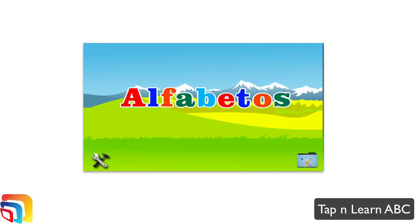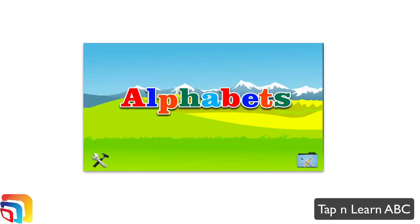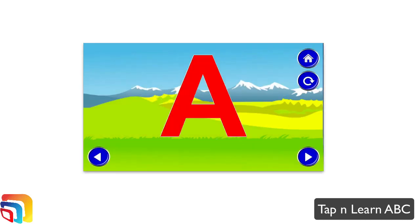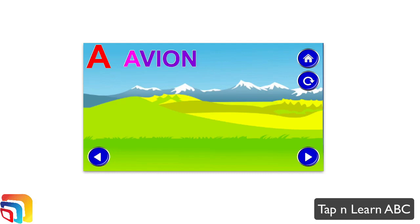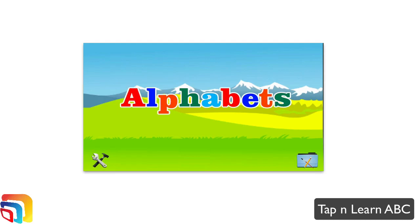They currently support English, Spanish, and French. So we can even just do one in French here, for example. You simply tap it, tap the alphabet — ah, ah, como, avion. You can see here you have the voice, you have the animations, the same concept. So this is a great way for your kids to get learning. Whether you want them to learn English, French, or Spanish, it's a great way. This is Tap and Learn ABC. Thank you.